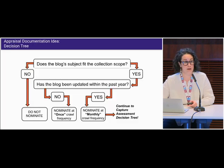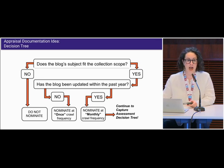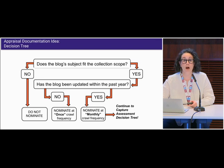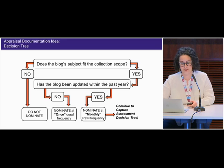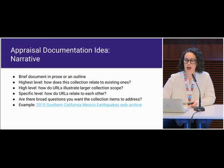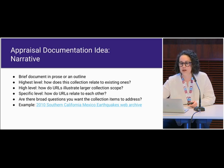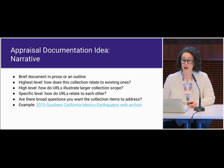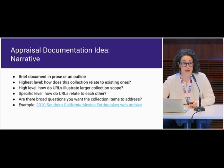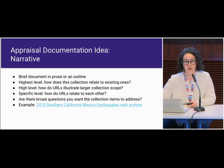Another type of appraisal documentation strategy is to use a decision tree to keep your processes consistent. This is a hypothetical decision tree for a blog collection; we'll use a more detailed one in the workshop to appraise a thematic collection. And another way to plan your collection and document your appraisal decisions is writing brief narratives relating individual URLs or types of content to each other, to the collection as a whole, and to other collections you have — even focusing on certain creators or dates of creation. An example will be referenced during the event-based collection appraisal exercise.